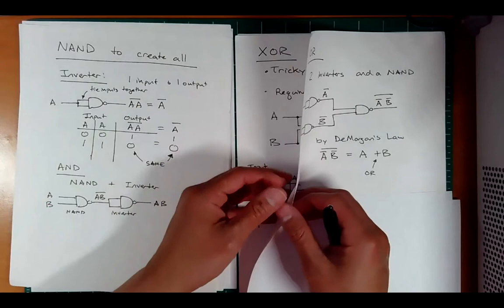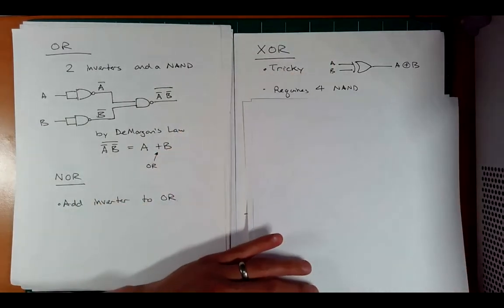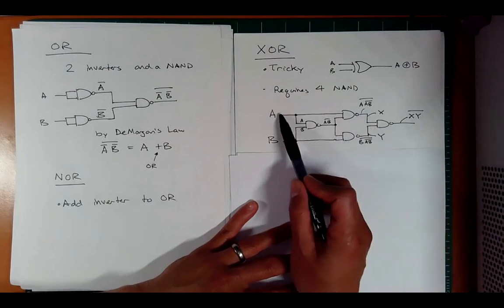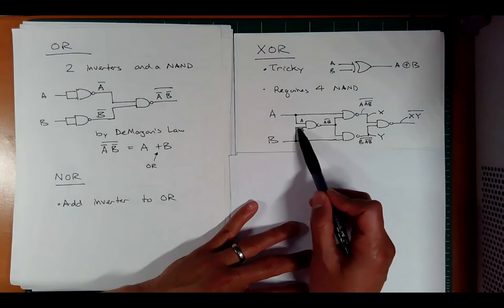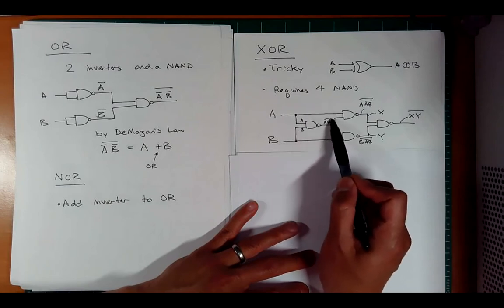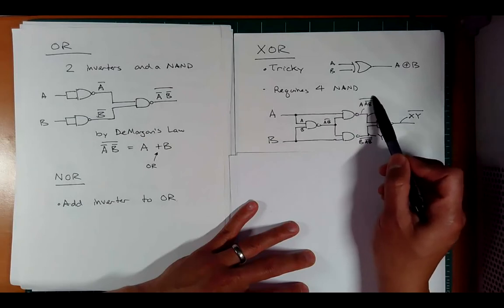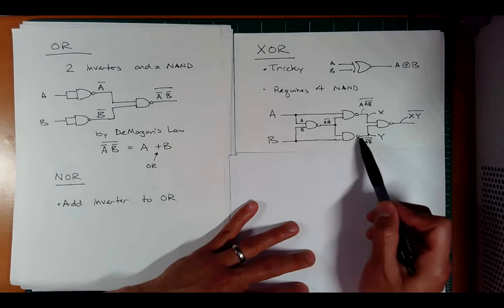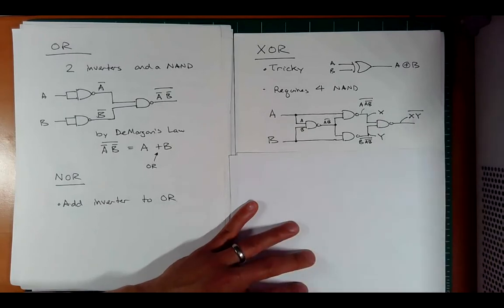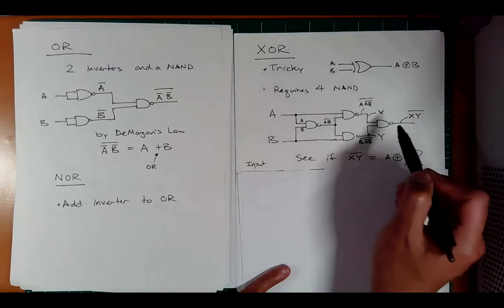The exclusive OR requires four NAND gates. A goes to the first and second NAND; B goes to the first and third. The first NAND gives AB-bar. The second NAND takes A and AB-bar, giving X. The third NAND takes B and AB-bar, giving Y. The output NAND takes X and Y, giving XY-bar — which we expect to match exclusive OR behavior.